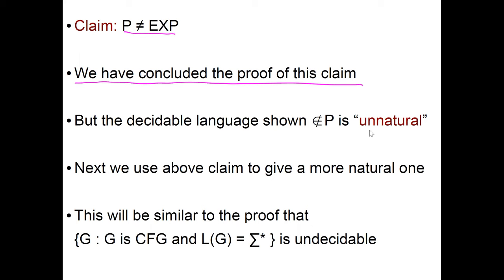The proof will be somewhat similar to the proof that the language of context-free grammars whose language is sigma star is undecidable, which we saw earlier. It is a scaled-down version of this which works for P and EXP, while the context-free grammar works for undecidability.